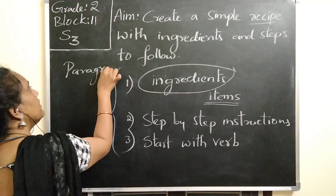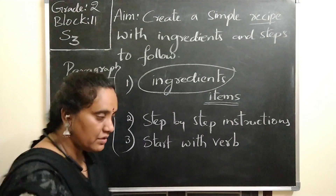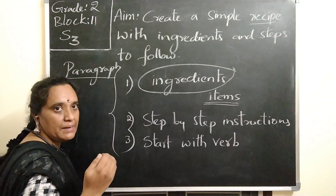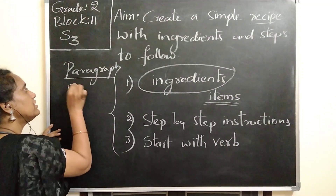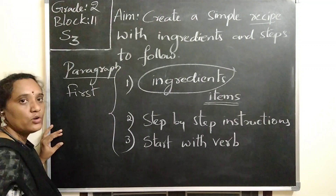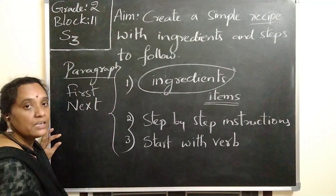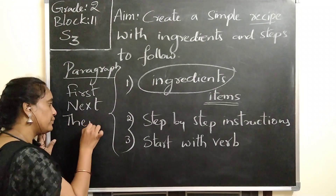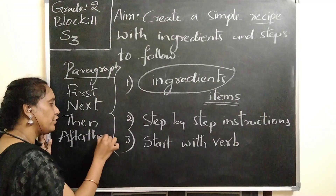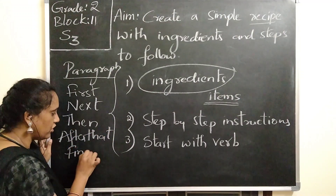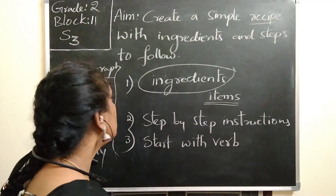Order words are the words we use to write steps one after the other perfectly. We use words like 'first' — first we want to take the ingredients; 'next' — the next step after the ingredients; 'then' — after completion of the third step; 'after that' — what we want to do next; and 'finally' — what we want to do at the end. These are the order words we normally use.